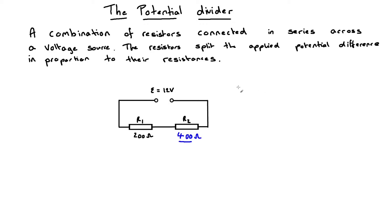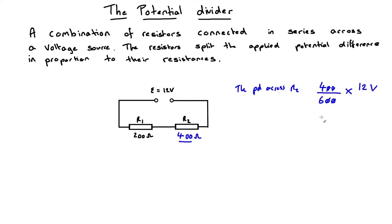The PD across R2: R2 is 400 ohms out of a total circuit resistance of 600 ohms, so it is 400/600ths of the total circuit resistance and therefore takes a 400/600ths share of our applied PD of 12 volts. Cancelling down: 12 divided by 6 is 2, and 2 times 4 is 8 — so that gives us 8 volts across the 400 ohm resistor and 4 volts across the 200 ohm resistor. Since R2 is a two-thirds share of the total resistance, it takes a two-thirds share of our input voltage, hence 8 volts.